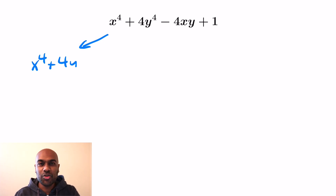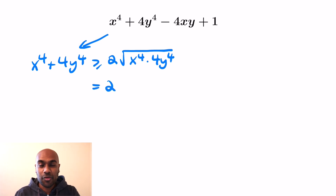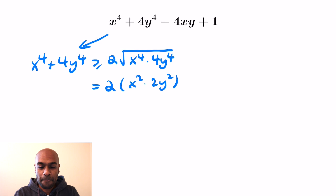Let's take a look at the first two terms: x to the fourth plus 4y to the fourth. There's an inequality — the arithmetic-geometric mean inequality — that tells us that this is greater than or equal to twice the square root of the product of the terms. The product being x to the fourth times 4y to the fourth. So if we take the square root, this is equal to twice the quantity x squared times 2y squared, which works out to 4 times x squared times y squared.